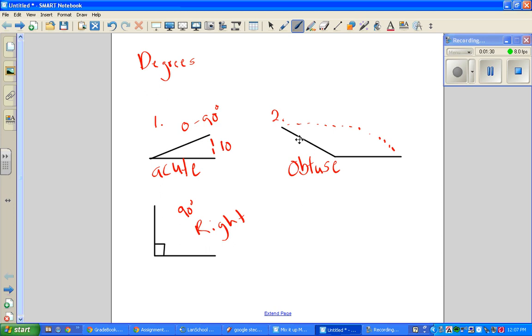And then our obtuse angles, which are either 90 degrees or bigger. That's how we can tell if something's acute, obtuse, or right. If it's acute, it's anywhere from 0 to 90. If it's obtuse, it's 90 or bigger. And if it's a right, it's exactly 90.